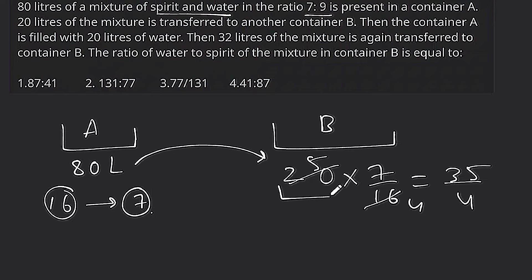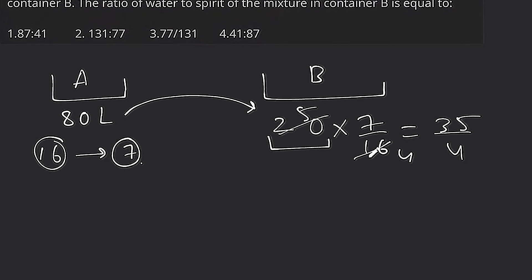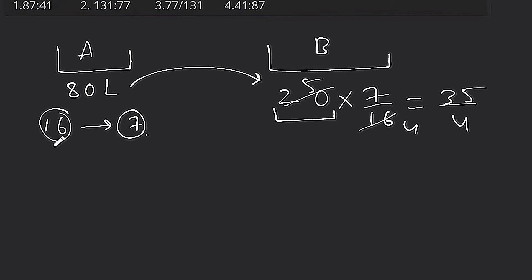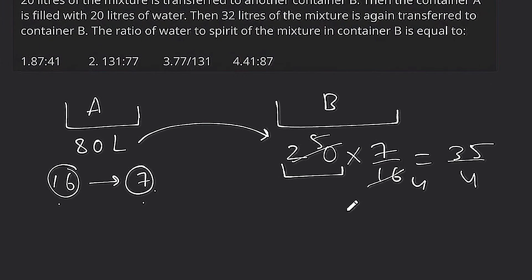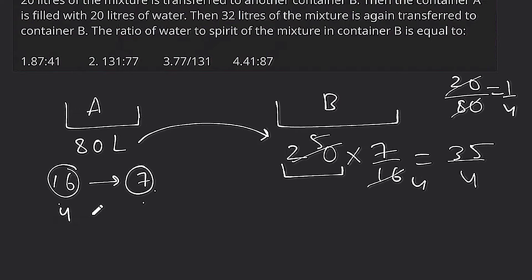The question says 20 liters is replaced from 80 liters. When we replace, the ratio becomes 1 by 4 — meaning out of every 4 parts of mixture, 1 part is replaced. So the replacement ratio from 80 liters is 1/4.